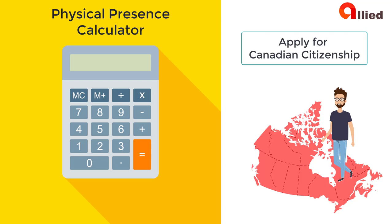The Physical Presence Calculator is for permanent residents applying for Canadian citizenship as adults. You need to submit it together with your citizenship application.